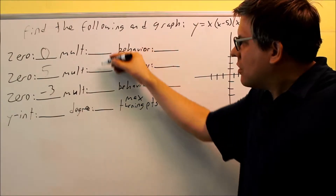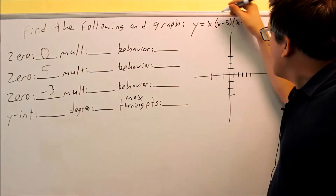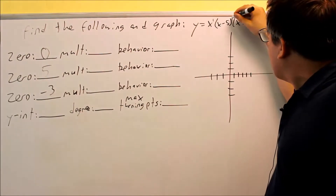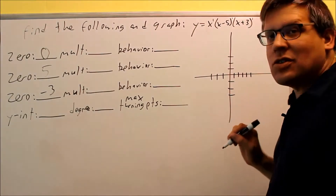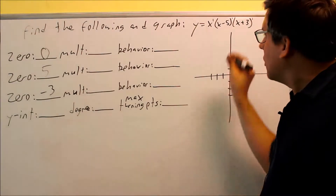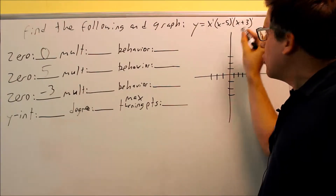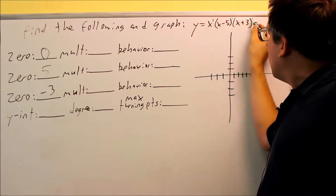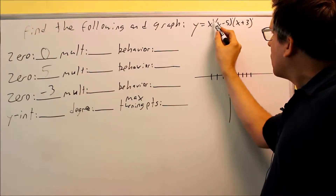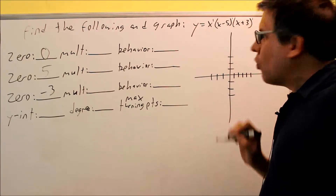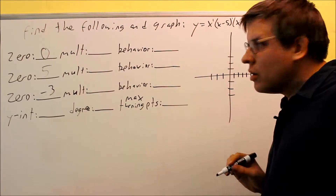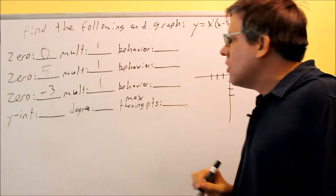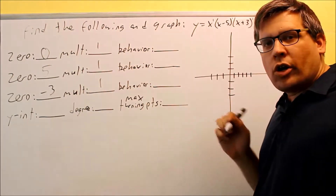The multiplicities would be the powers on each of these factored pieces. Since there was no power originally given, each of these are going to be a one. There's a one on this one, a one on that one, and a one on the other one. So each of these multiplicities are going to be one.